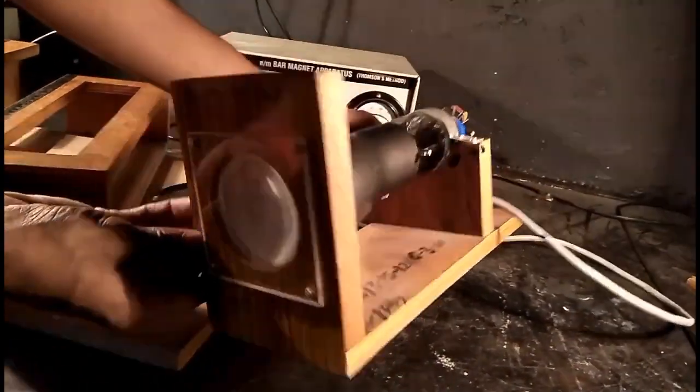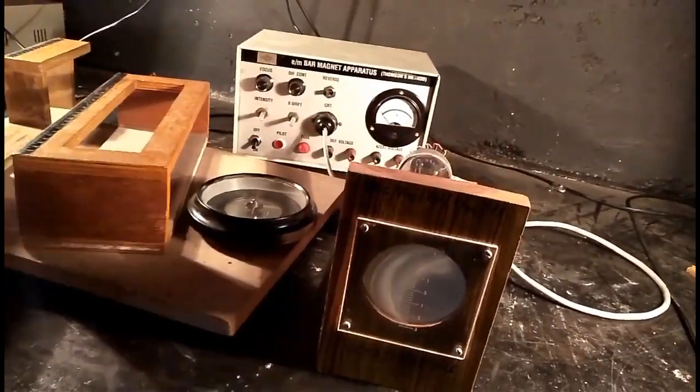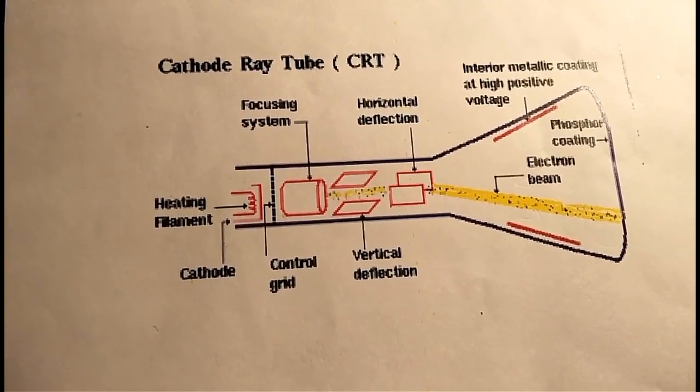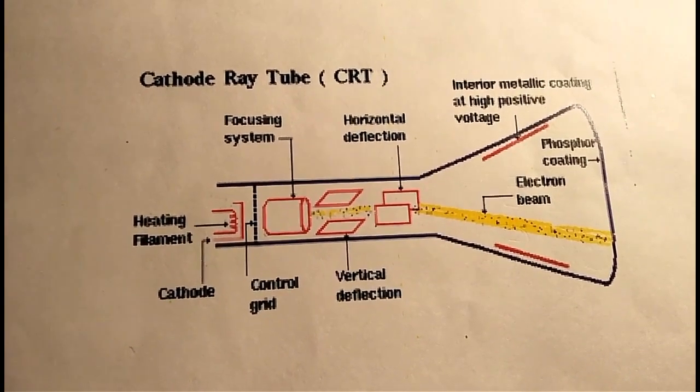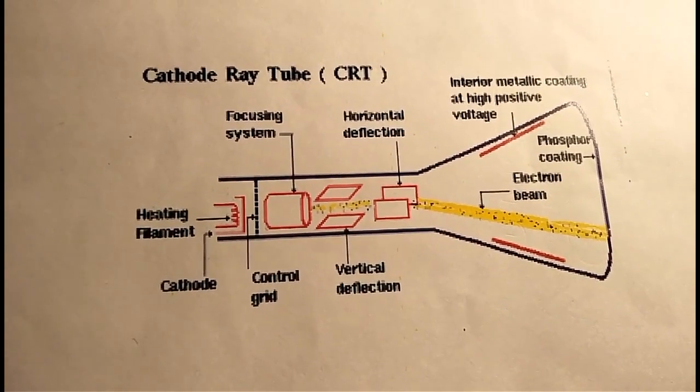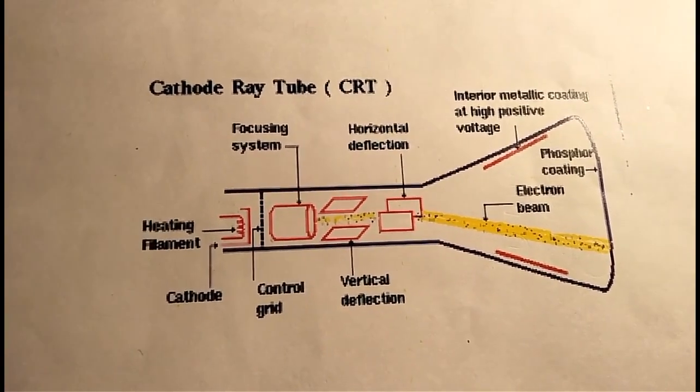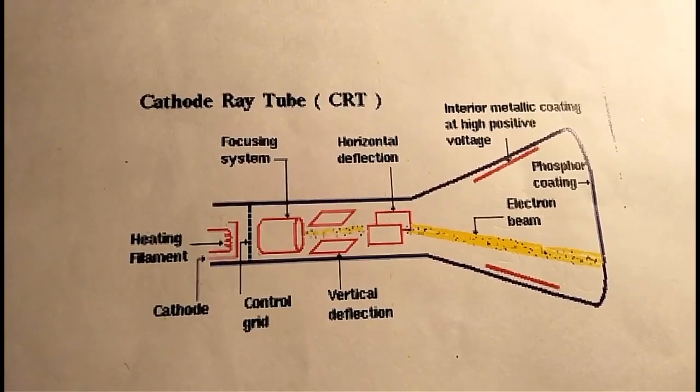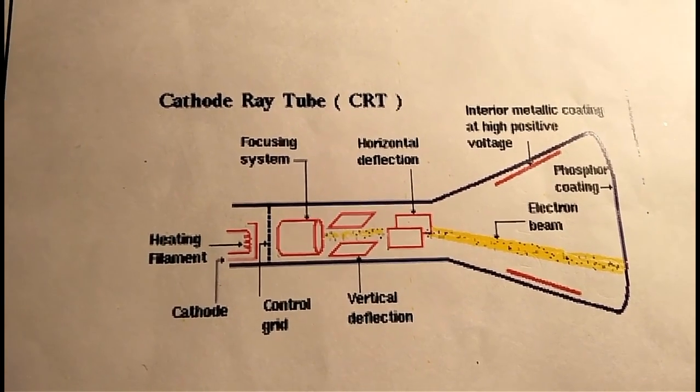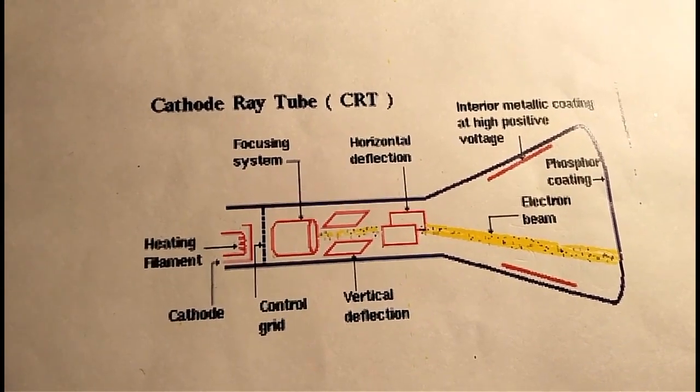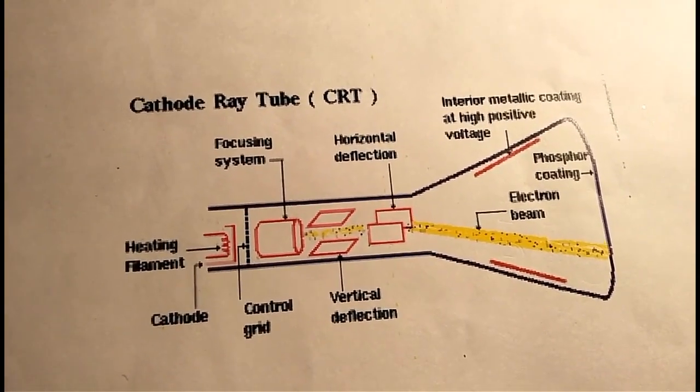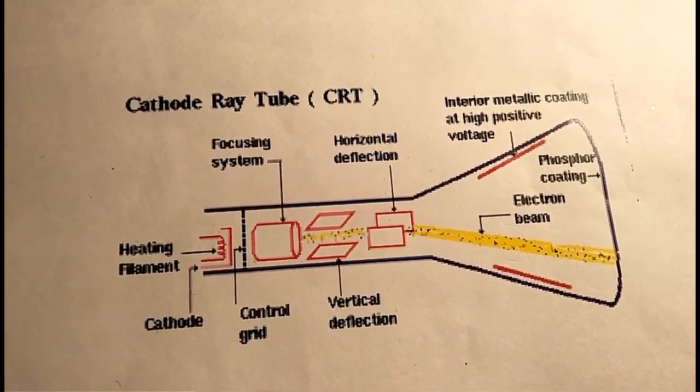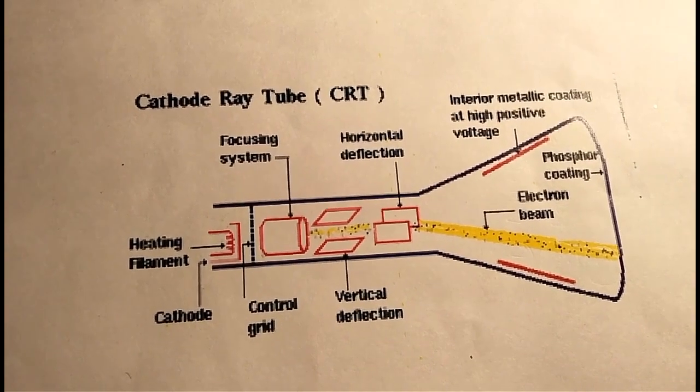What is CRT? The cathode ray tube is a vacuum tube that contains one or more electron guns and a phosphorescent screen and is used to display images. It modulates, accelerates, and deflects electron beams onto the screen to create images. The image may represent electric waveforms, pictures, radar targets, or others.